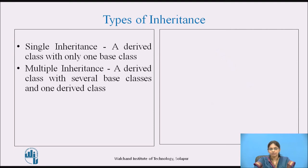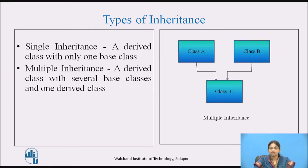The next is multiple inheritance. In multiple inheritance, a derived class has several base classes and only one derived class. The structure shows more than one base class from which a single derived class has been derived. In this example, there are two base classes, class A and class B, from which class C has been derived.